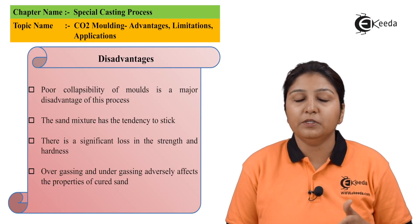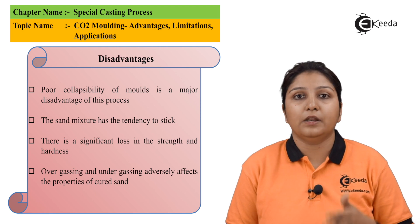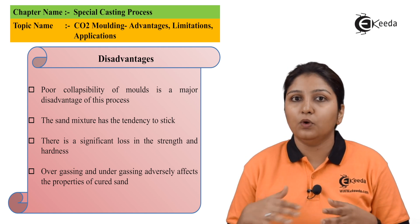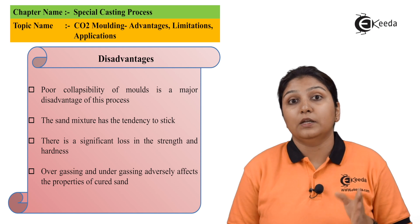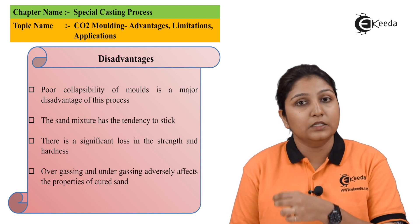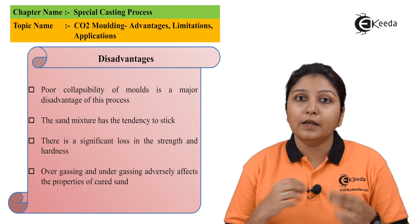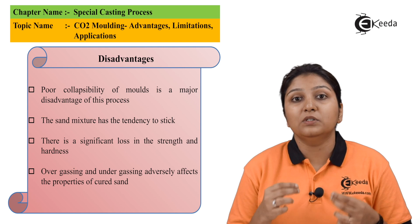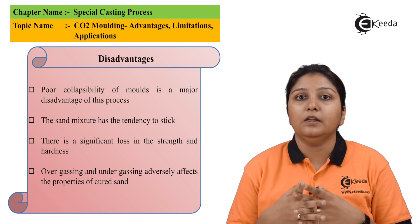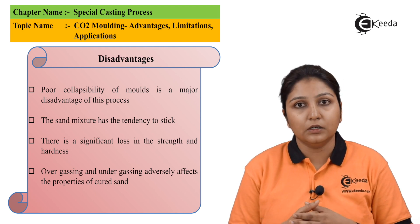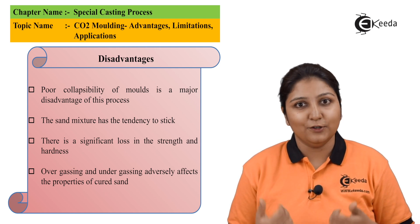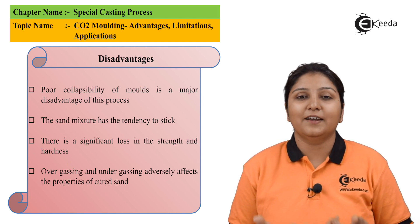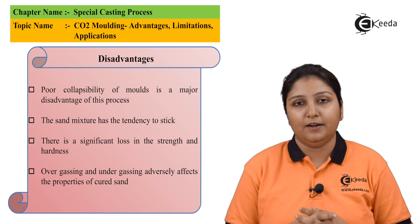When talking about the disadvantages: collapsibility is very poor. There is a lot of loss in strength, and the tendency for sand to stick is increased. These are some disadvantages we face during CO2 molding. Thank you for watching this video, stay tuned with Ikeda and do subscribe to our channel.